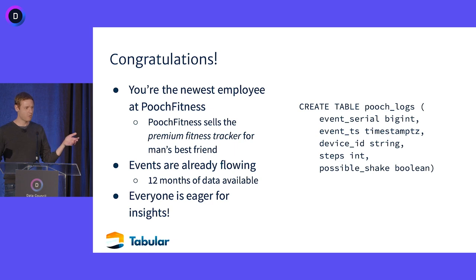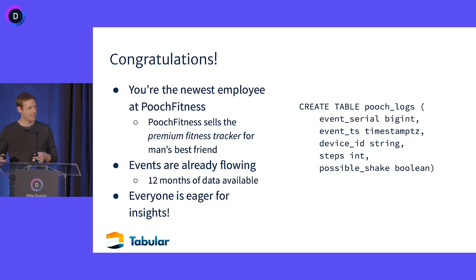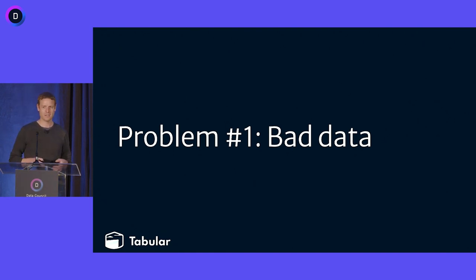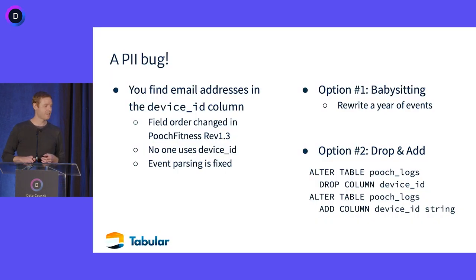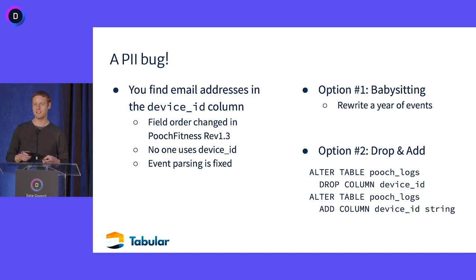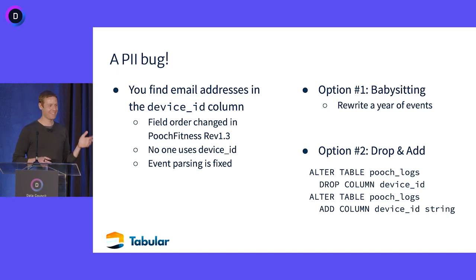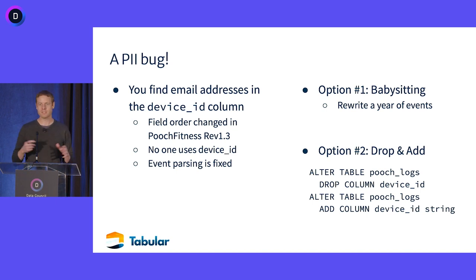On your first day, you go through the table and say, show me some distinct values from the device ID column. And it turns out — uh oh — we've got PII in there. Something happened in revision 1.3 of the device: field orders changed, and now we've got user-identifiable information in the wrong column. Has anyone actually leaked data into the wrong column before? It happens, and it's not just exposing the identity of our best friends.